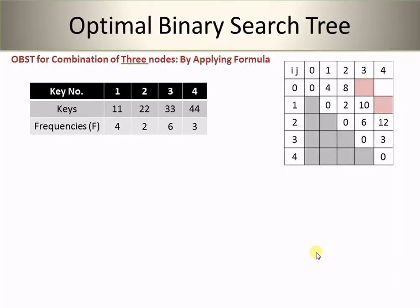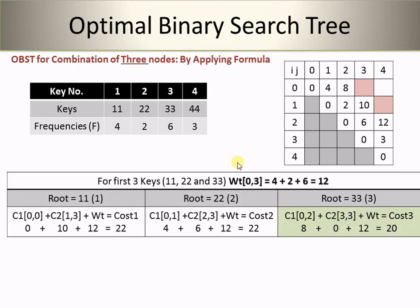For the second combination — nodes 22, 33, 44 — 33 is the middle key, so 22 and 44 become its left and right children respectively, giving a minimum cost of 16. Both 33 as root nodes are at the same level. Now let's apply the formula as the second method to find the optimal binary search tree. This is the cost matrix generated after the combination of 2 nodes.